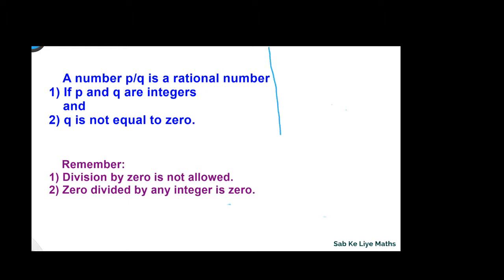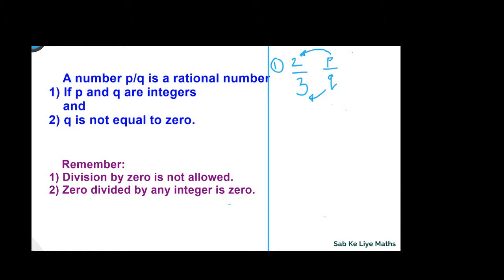Let's take the first example: 2 by 3. It is in the form P by Q, where P is equal to 2 and Q is equal to 3. Both P and Q are integers — 2 and 3 are integers — so the first condition is satisfied.